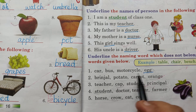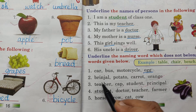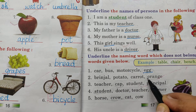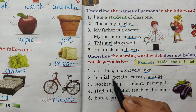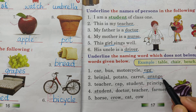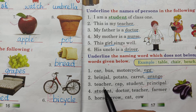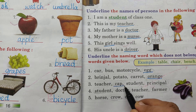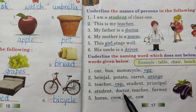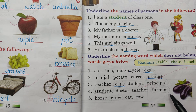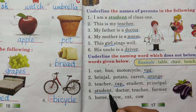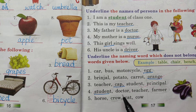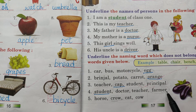Brinjal, Potato, Carrot - vegetables. Orange - fruit. Orange does not belong to this group. Teacher, Cap, Student, Principal - cap does not belong to this group. Student, Doctor, Teacher, Farmer - these are professions.